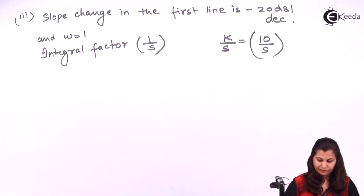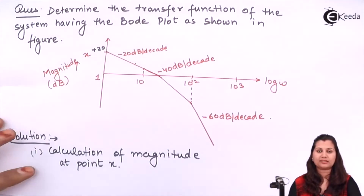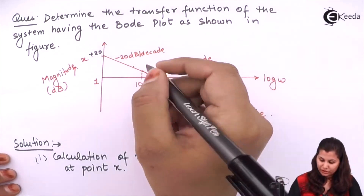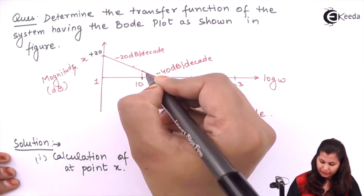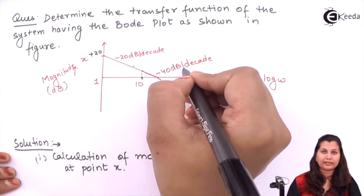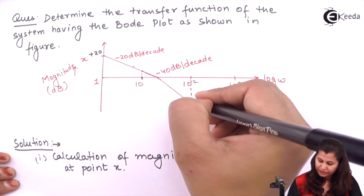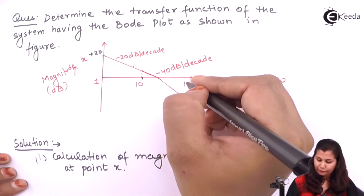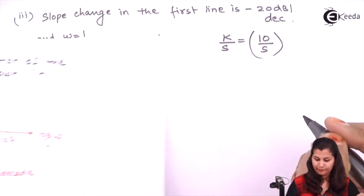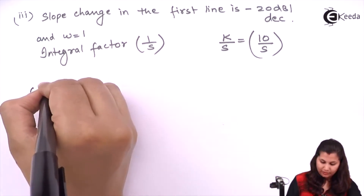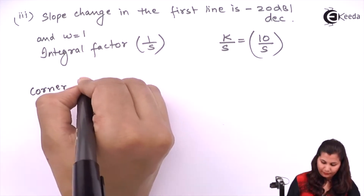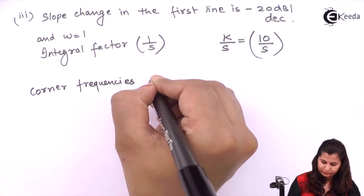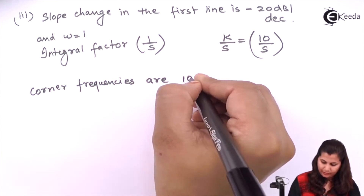Now we identify the corner frequencies — the frequencies at which the slope is changing. The slope changes at omega equals 10, going from minus 20 to minus 40 dB per decade. It also changes at omega equals 100, going from minus 40 to minus 60 dB per decade. So the corner frequencies are 10 and 100.